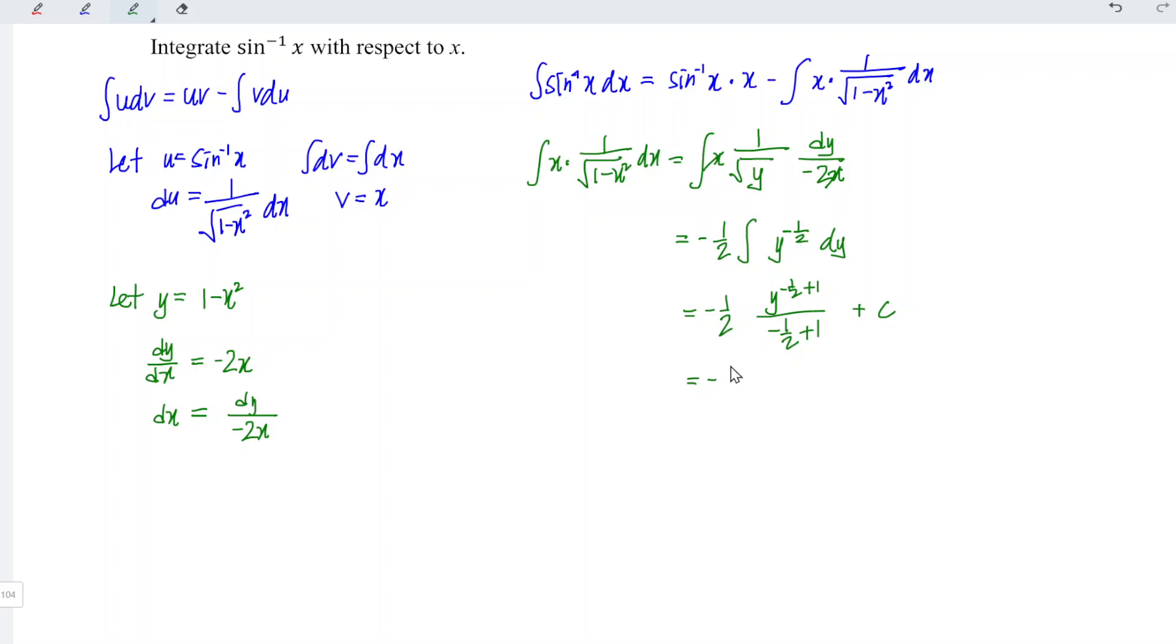So this is equal to negative 1 over 2 times y minus 1 over 2 plus 1 is positive 1 over 2 plus 1 positive 1 over 2 add the constant c. So 1 over 2 cancels with 1 over 2, we're left with negative y to the 1 over 2, which is square root. And y is equal to 1 minus x square. Remember, add c.